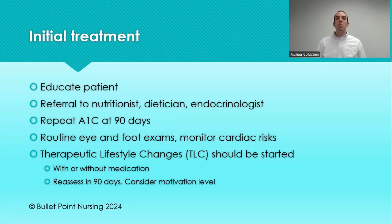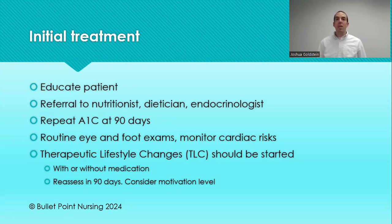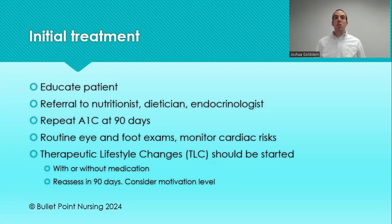As an APRN, you're going to be providing referrals — a nutritionist, dietician, or endocrinologist. Diabetes is still covered within primary care up to a certain point, but it's always okay to refer to an endocrinologist. When treating a patient for type 2 diabetes, we are always going to be monitoring their A1C. While getting them to their target, we check A1C every 90 days generally according to most guidelines.